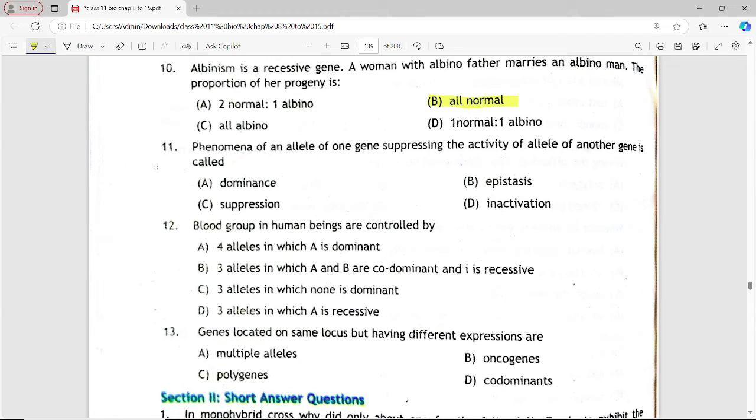Next is: Phenomenon of allele of one gene suppressing activity of allele of another gene is called? Options are: dominance, epistasis, suppression, inactivation. Answer is option B, epistasis.